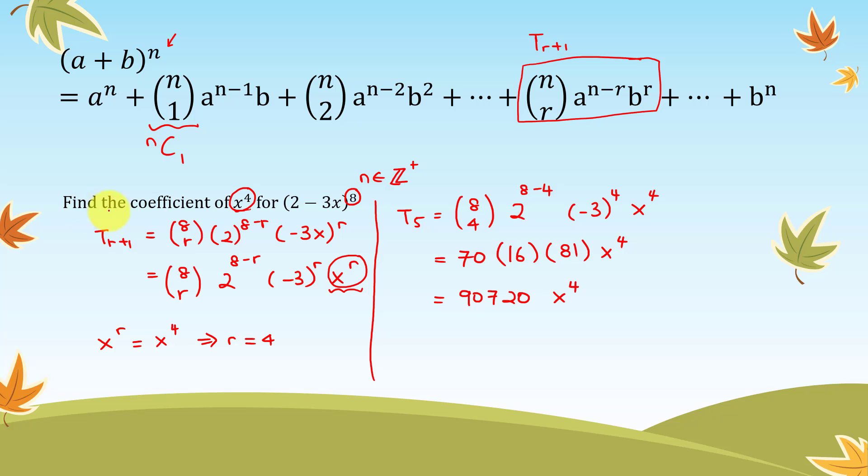If you read the question carefully, the question said the coefficient. So this is the term, but we simply want the coefficient, which is the number in front here. Therefore, the coefficient of x to the power of 4 is 90,720. Okay, so let's go to the next question.